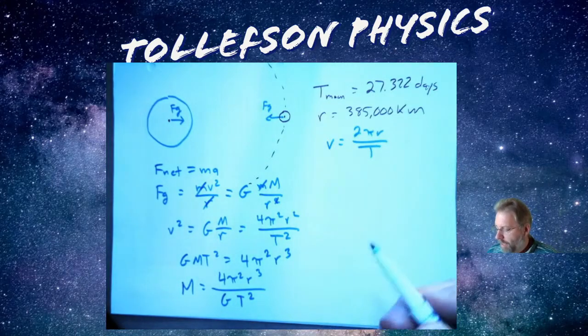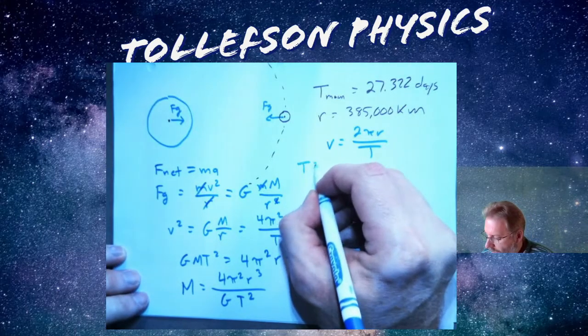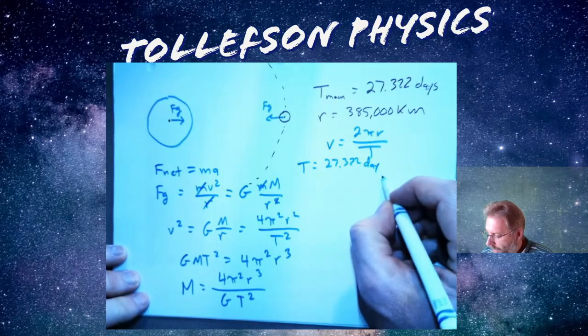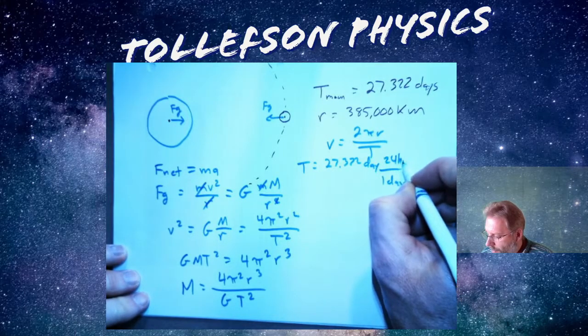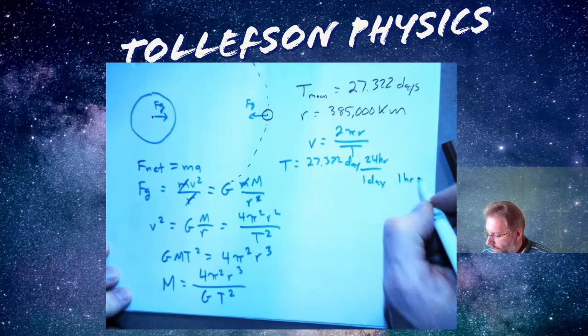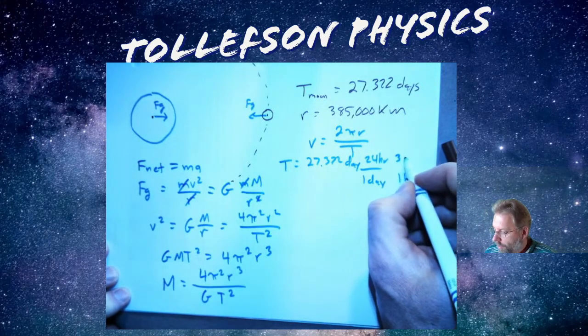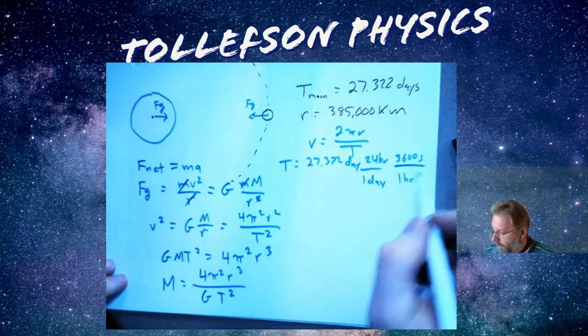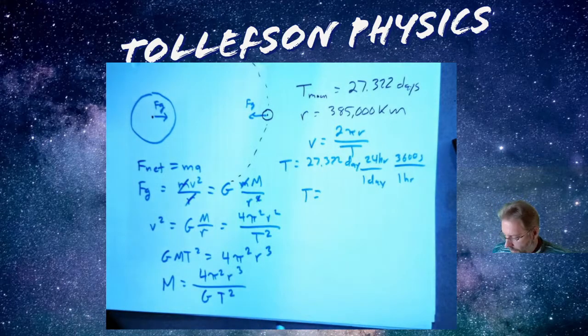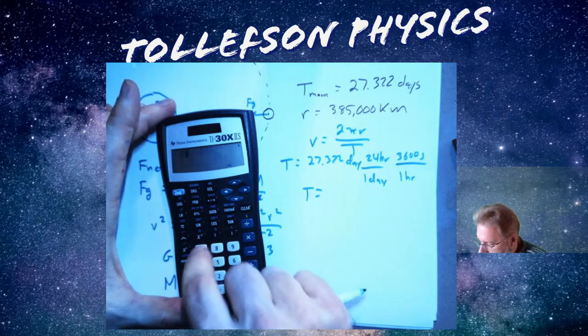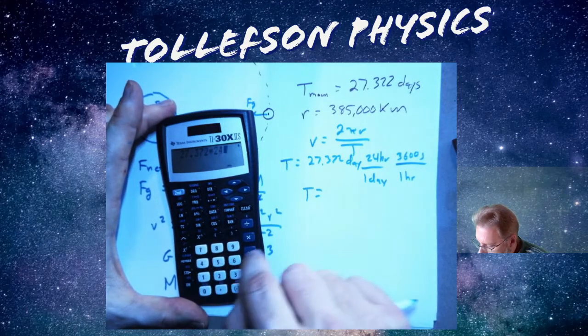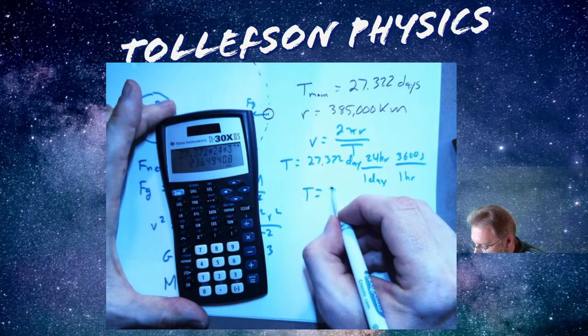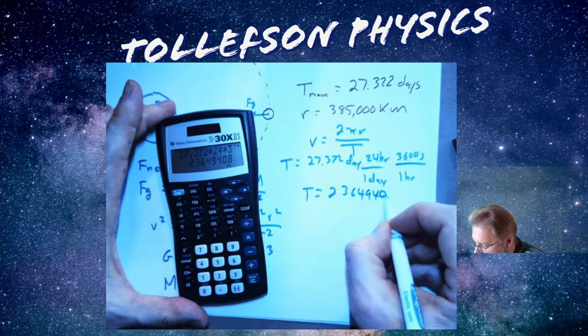All right so t, I need to convert, right? So for t I have 27.322 days. I know that in one day there's 24 hours and then I know that in one hour there is 3600 seconds which is 60 times 60 if you don't know where that came from. And so the actual period of the moon is 27.372 times 24 times 3600.